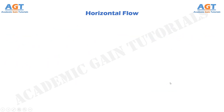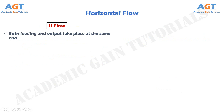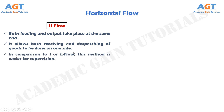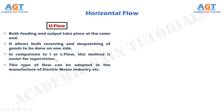Number 3: U flow. In this, both feeding and output take place at the same end, that is, it allows both receiving and dispatching of goods to be done on one side. In comparison to I or L flow, this method is easier for supervision. This type of flow can be adopted in the manufacture of electric motor industries. We can see U flow in this figure.